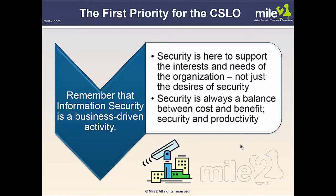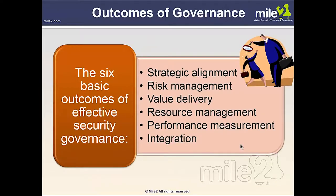We need a compromise: we want to be very secure, but we don't want to impact productivity so negatively that people can't use the systems. Six basic outcomes of effective security governance: strategic alignment, good risk management, good value delivery, manage resources well, measure performance, and overall integration.